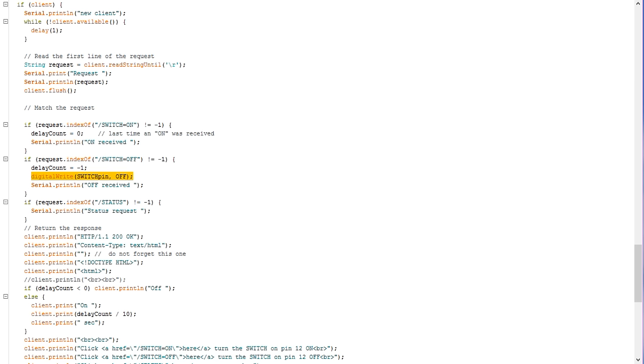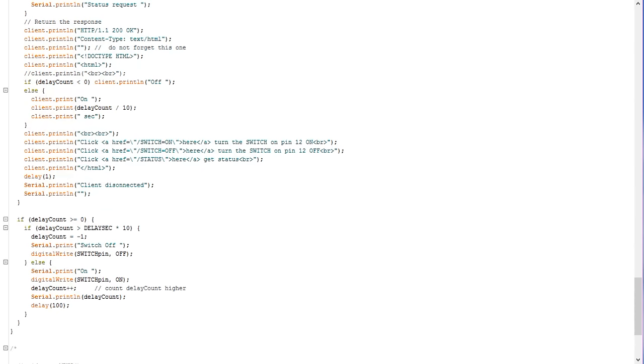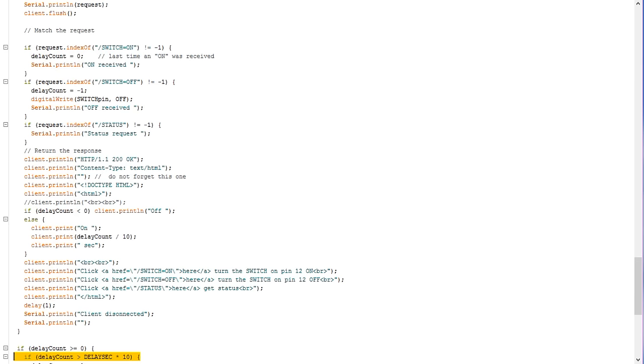This is done with a simple counter, which increases every 100 milliseconds. If it receives the command STATUS, it sends the number of seconds since the last ON command. This functionality helped me to debug the sender. The server also sends a small feedback text. This is mainly used if you want to test it with a browser.